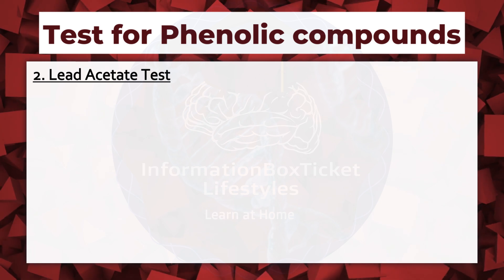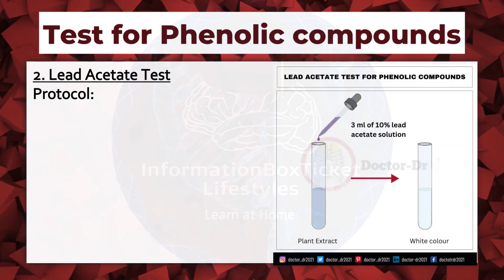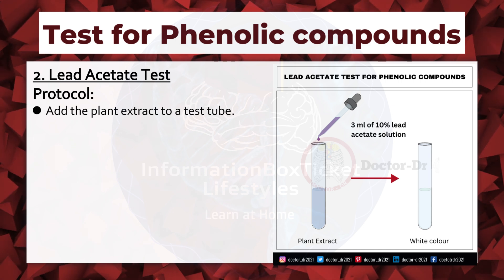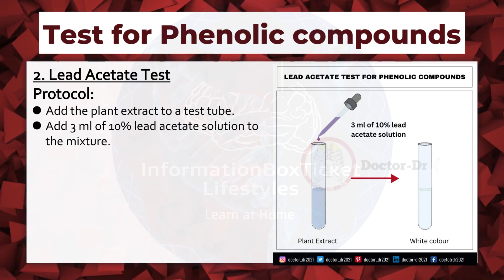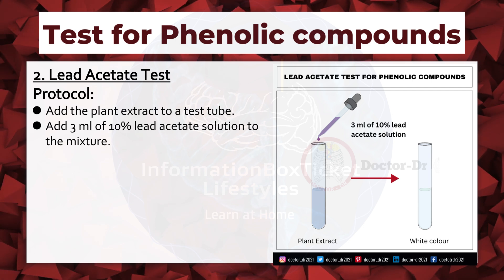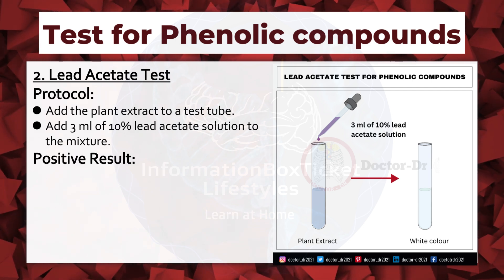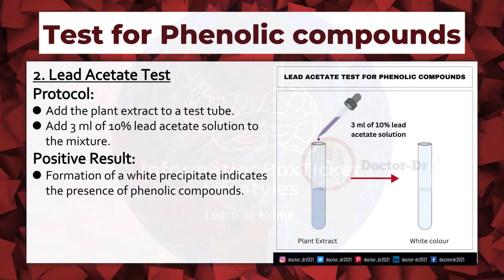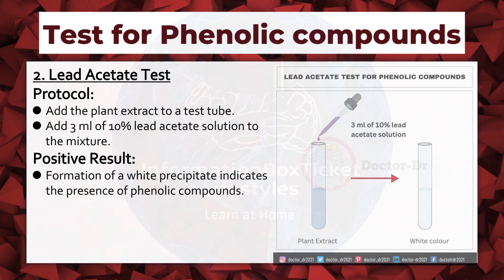Lead Acetate Test. Protocol: add the plant extract to a test tube, then add 3 ml of 10% lead acetate solution to the mixture. Positive result: formation of a white precipitate indicates the presence of phenolic compounds.